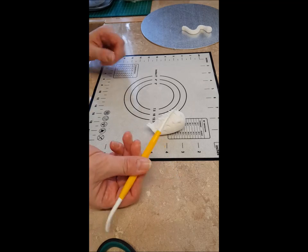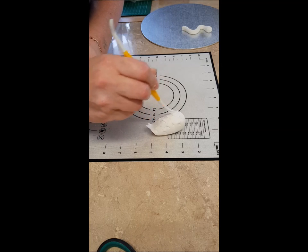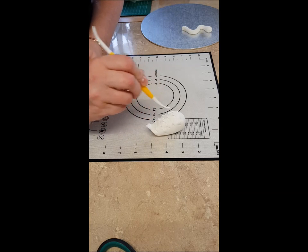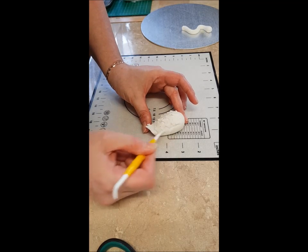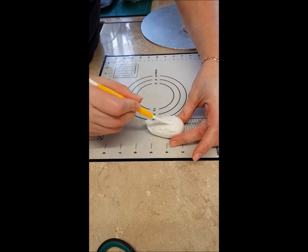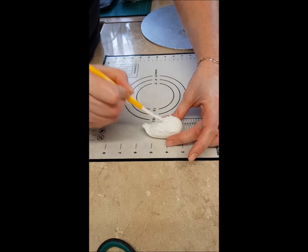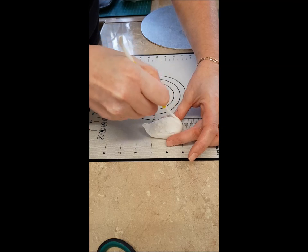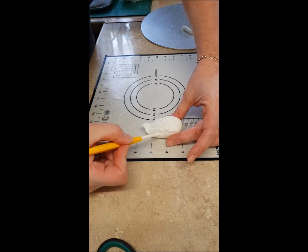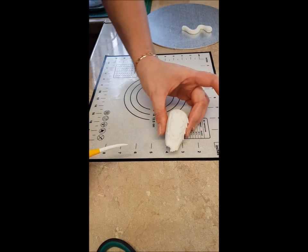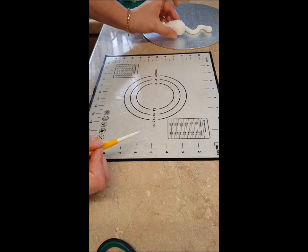Then just get a tool like this and just make little lines going down it, so it's a bit distressed sort of thing. Then put that aside to dry.